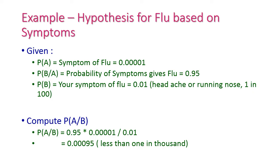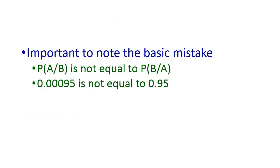With this data we need to compute P(A | B). P(A | B) = 0.95 × 0.00001 / 0.01 = 0.00095, which is less than 1 in 1000 people. A common mistake in Bayes rule is thinking P(A | B) equals P(B | A) — they are not equal. Here P(A | B) = 0.00095, which is not equal to P(B | A) = 0.95. That is, 95% is not the same as less than 1 in 1000.